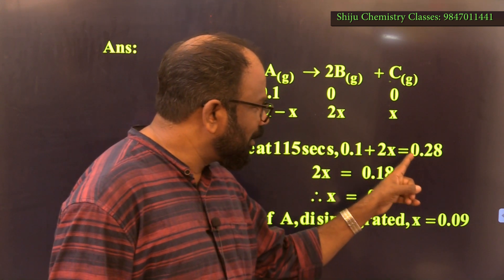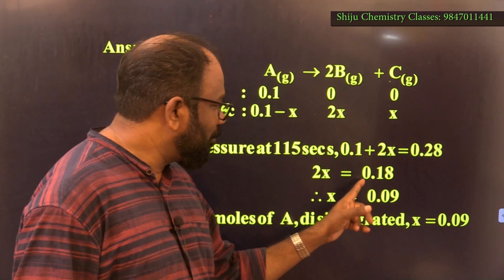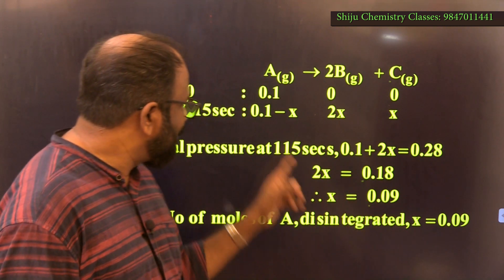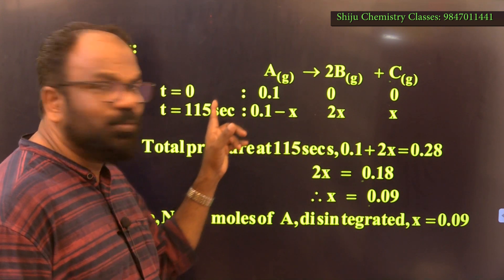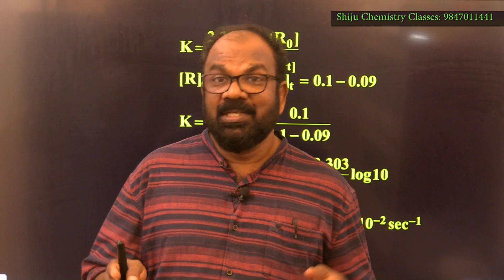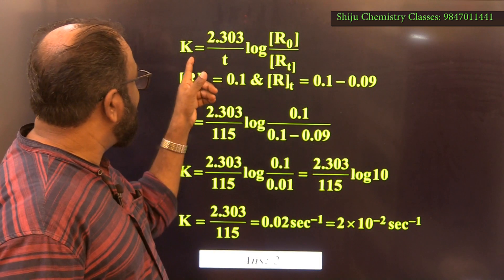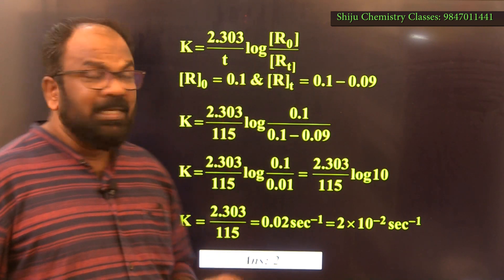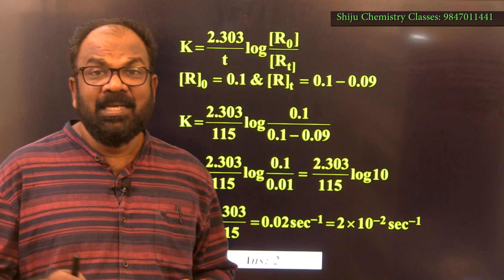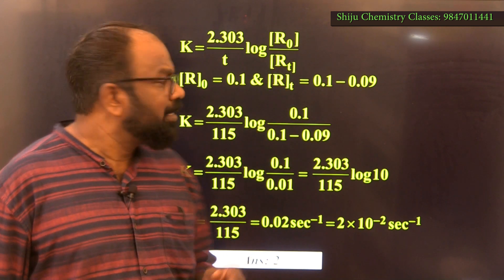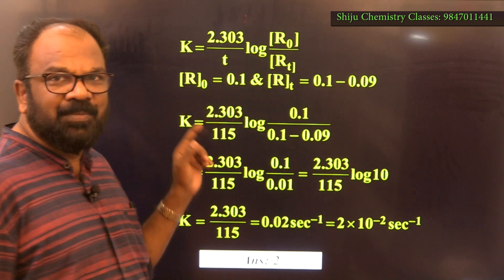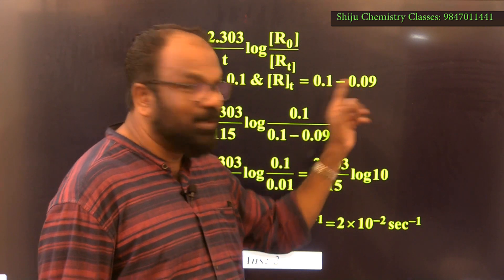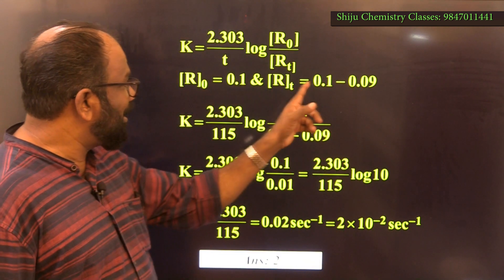Therefore 2x = 0.28 − 0.1 = 0.18, so x = 0.09. This x is the moles of A that have dissociated at t = 115 s. For a first order reaction, the rate constant k = (2.303 / t) × log(R₀ / Rₜ), where R₀ is the initial concentration and Rₜ is the final concentration. Here R₀ = 0.1 and Rₜ = 0.1 − x.